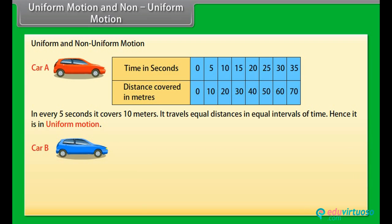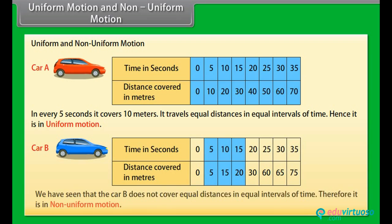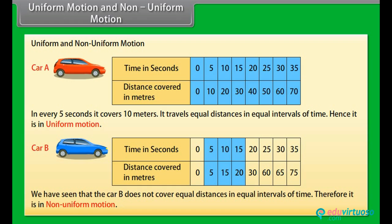Look at car B now. Car B covers 5 meters in 5 seconds, 15 meters in 10 seconds, 20 meters in 15 seconds. Car B does not cover equal distances in equal intervals of time. Therefore it is in non-uniform motion.